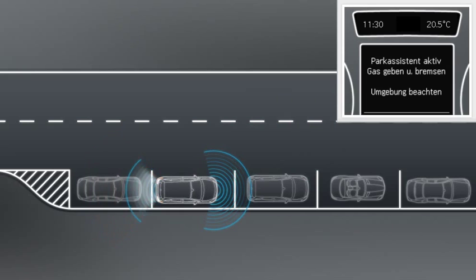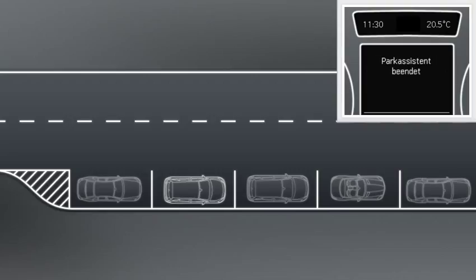Active Parking Assist takes care of steering up to a speed of 10 km per hour. All the driver needs to do is operate the clutch, accelerator and brake pedal.